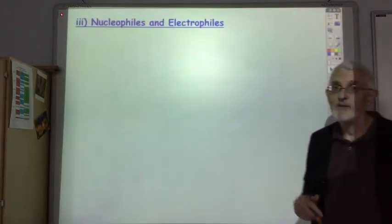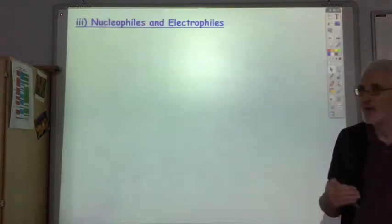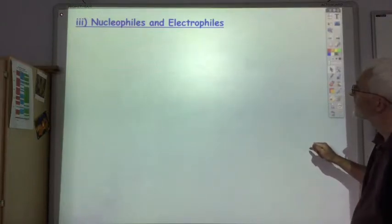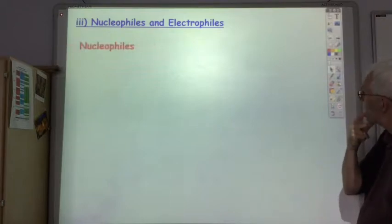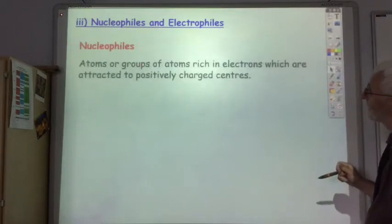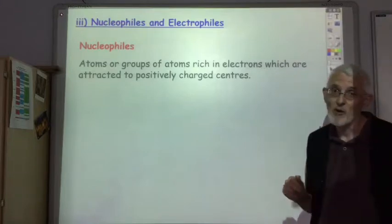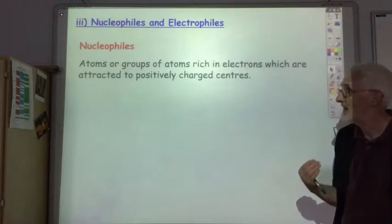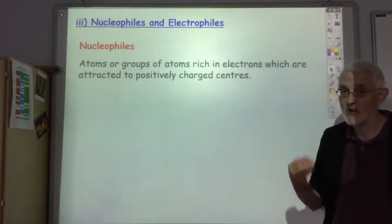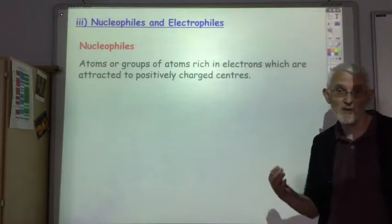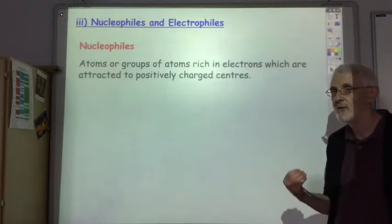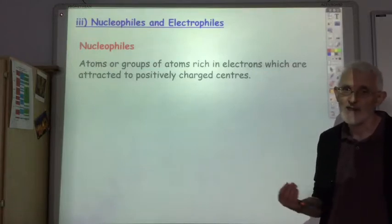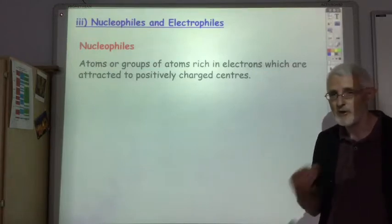Okay I want to briefly introduce nucleophiles and electrophiles. We'll come across these an awful lot throughout this section. Nucleophiles, let's look at them first. They're atoms or groups of atoms which are rich in electrons and therefore are going to be attracted to a positively charged center, for example the nucleus. The nucleus is positive so nucleophile loves positive charges and they do that because either they've got negative charge or they're rich in electrons.